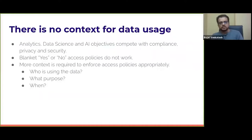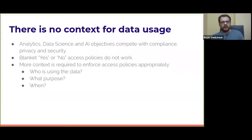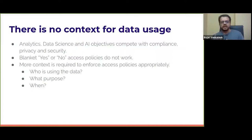The third problem is that there's no context for data usage. Analytics, data science, and AI have competing objectives when it comes to compliance, privacy, and security. For analytics and AI, you want as much access to data as possible so people can try different things, find different insights, and drive business. On the other hand, the best compliance, privacy, and security would be to give access to no one — but that's not practical. Both extremes are impractical. You need a much more nuanced approach to providing access as well as monitoring and auditing usage of this data.